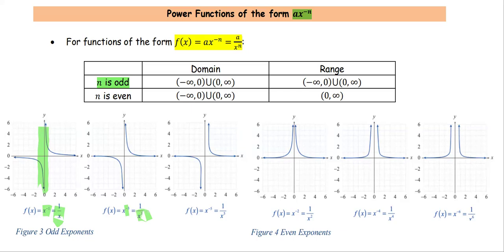Again, x is not defined at 0, so we have the vertical asymptote at x = 0. Another example is x to the power negative 5th, or 1 over x to the 5th. The graph behaves the same way, just going deeper or faster with higher power. From the graph of these three functions, for n an odd number, the domain of ax to the negative n is all negative x-values union all positive x-values, skipping 0. The range is from negative infinity to 0, union 0 to infinity.